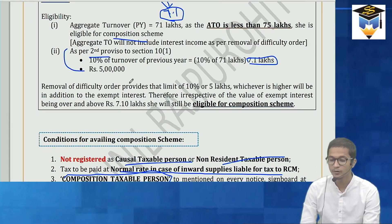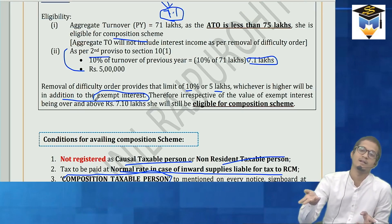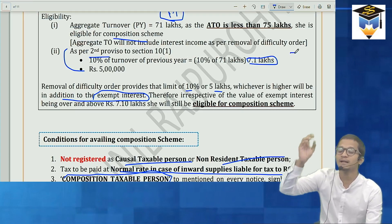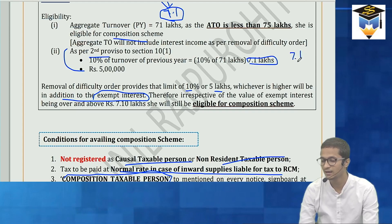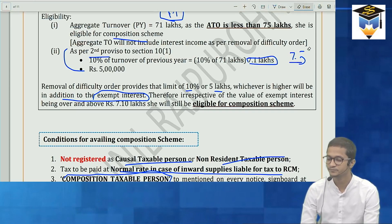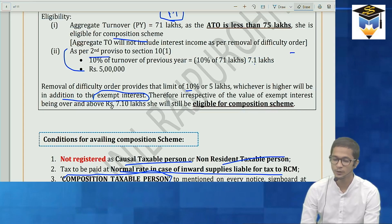A removal of difficulty order was issued which provides that the limit of 10% or 5 lakhs whichever is higher will be in addition to exempt interest income. So interest is neither included in turnover nor counted in the second proviso service limit. If rent received is 7.1 lakhs, she is eligible. If it were 7.5 lakhs, she would not be eligible. Irrespective of interest income, she is still eligible to opt for composition scheme here.